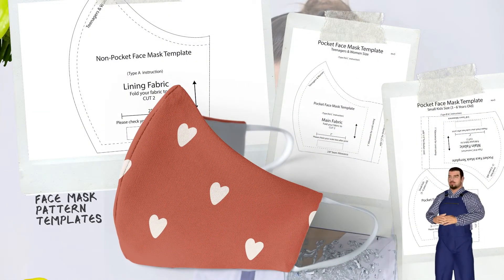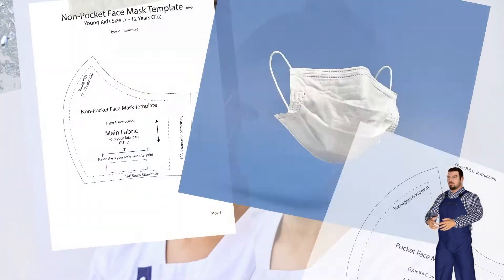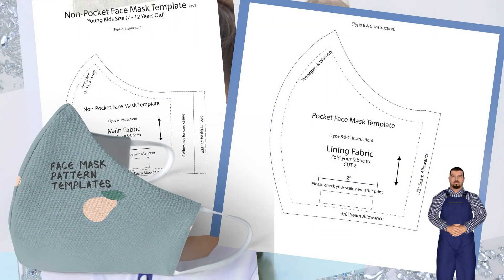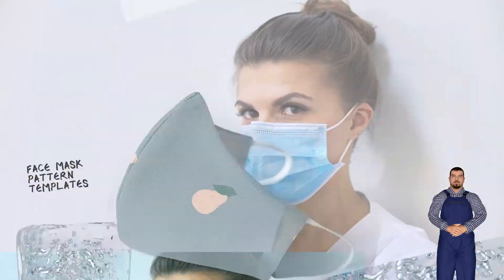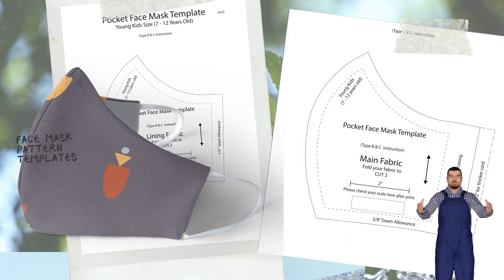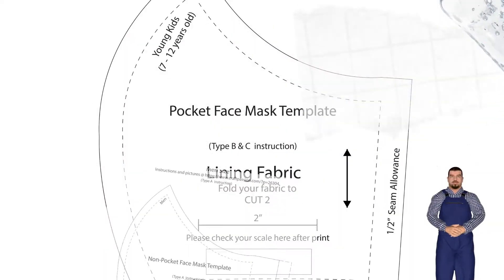3. Pocket Face Mask Sewing Pattern with 3/8 inch seam allowance included. You may sew with 1/4 inch seam allowance. Use on Type B and C: men, women/teenagers, kids 7 to 12, kids 3 to 6.